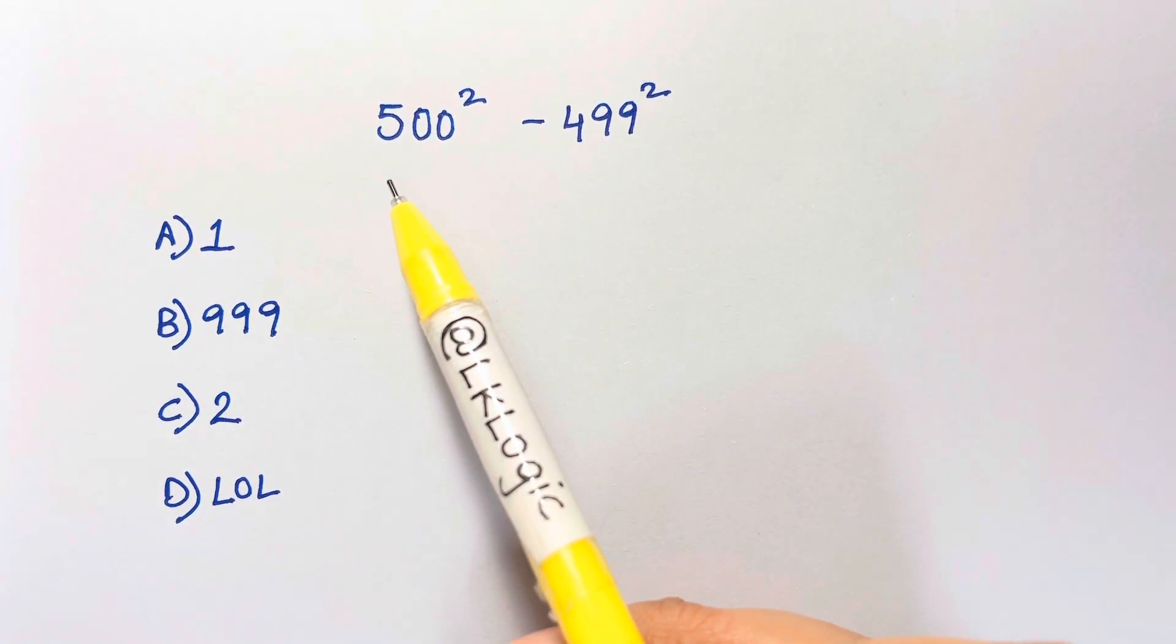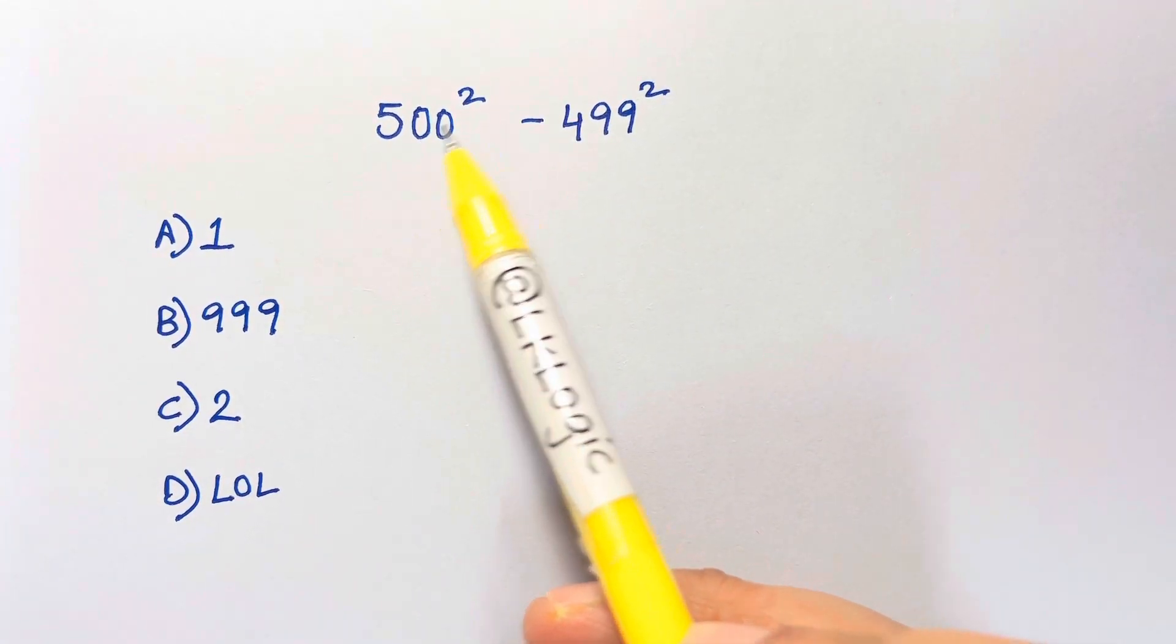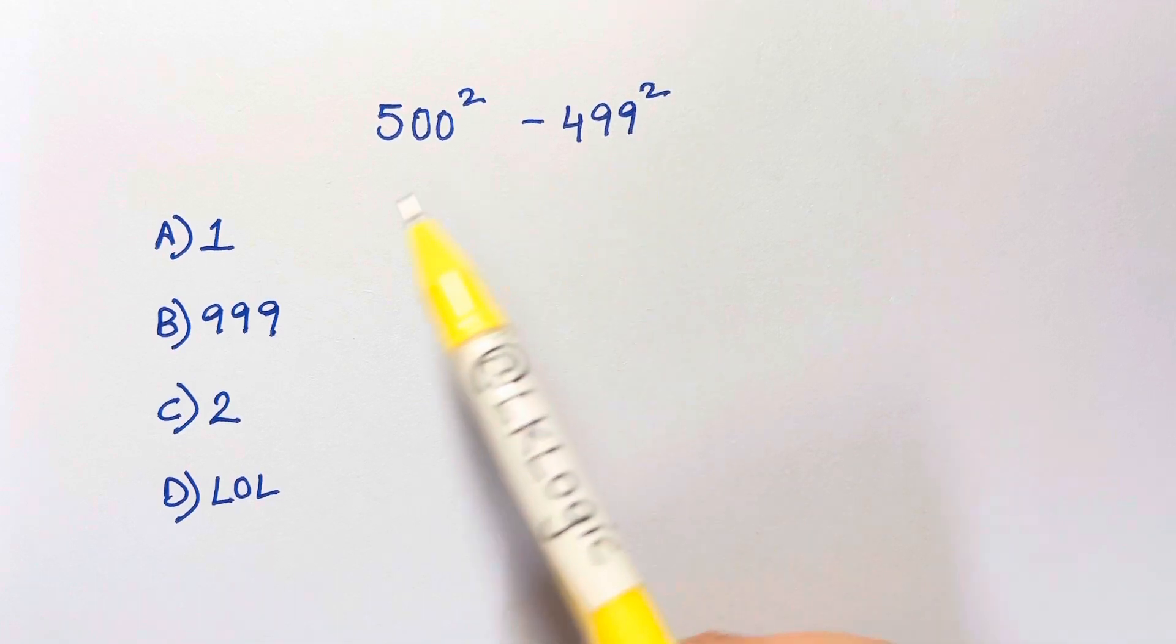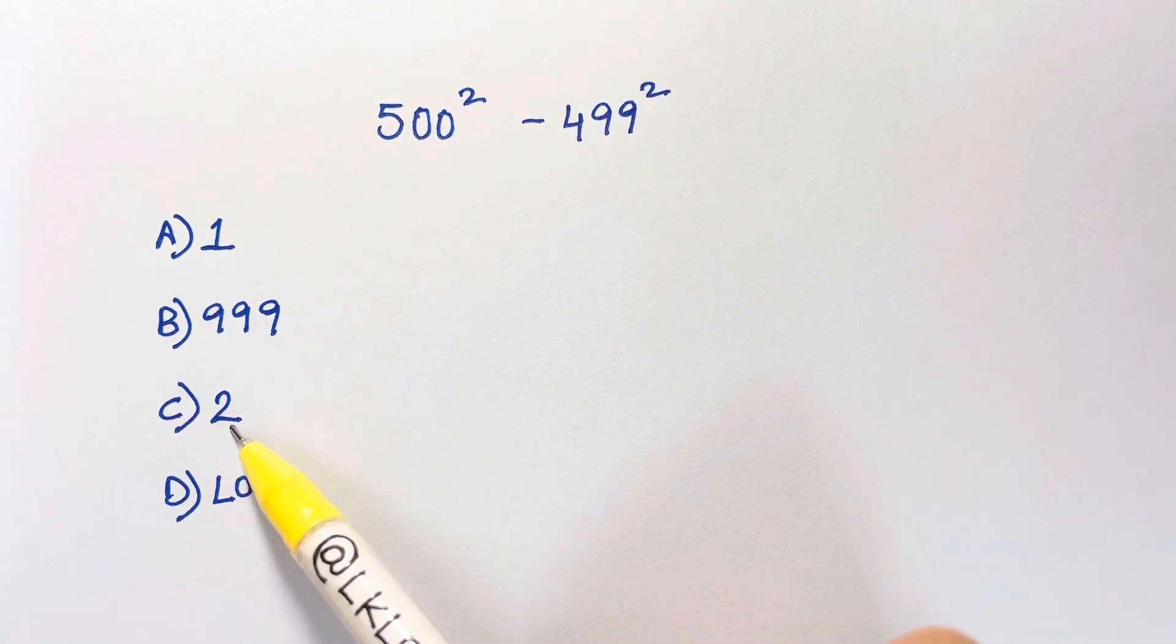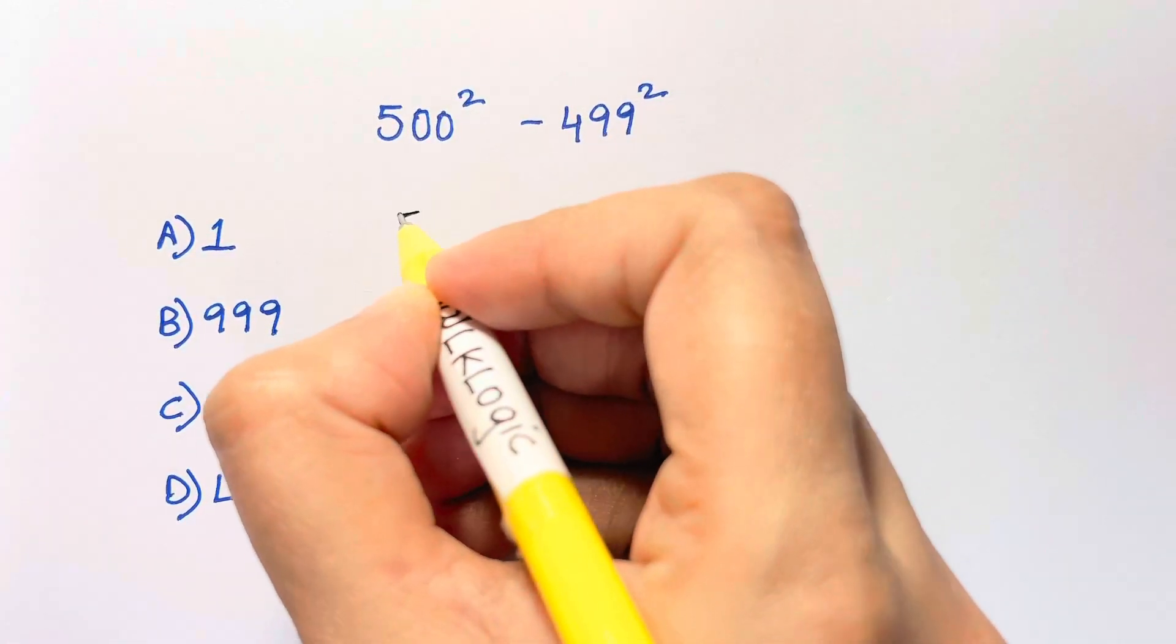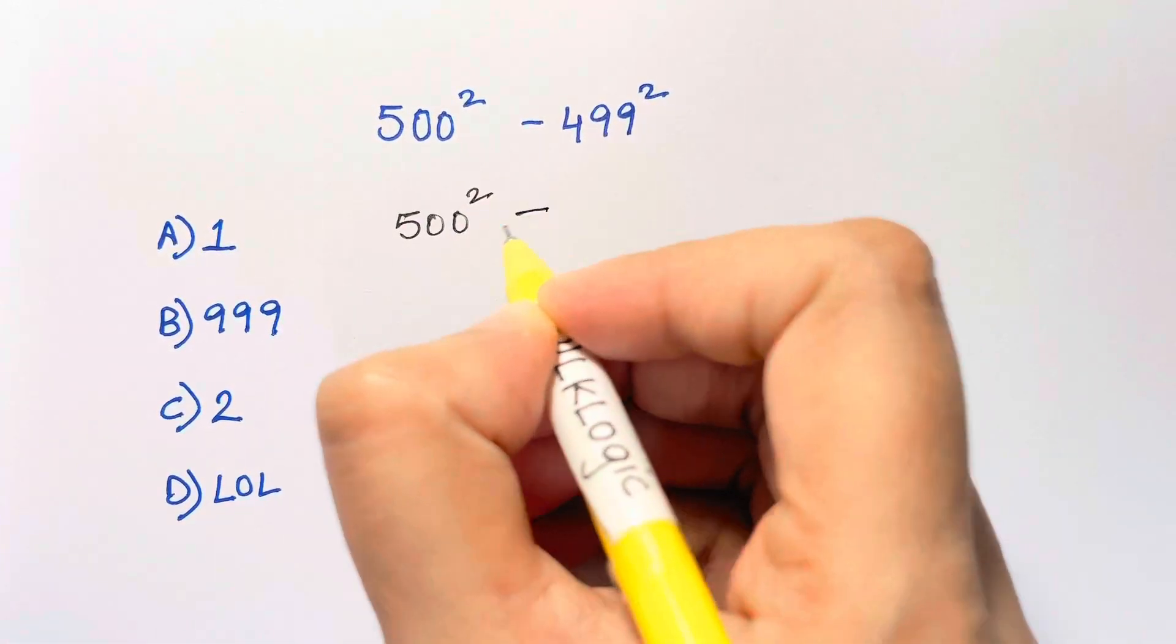Hi guys, I have an amazing square problem for you all: 500² minus 499². Is it equal to 1 or 999 or 2 or LOL? So what we're going to do is take 500² minus 499, which can be written as 500 minus 1 the whole square.